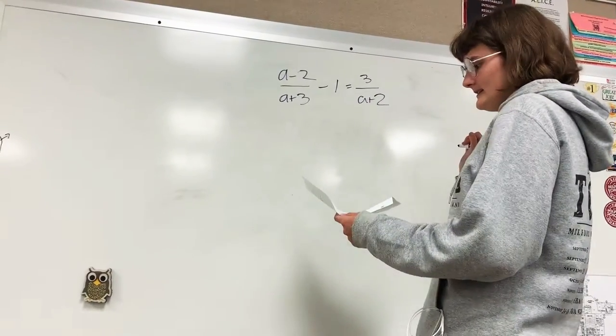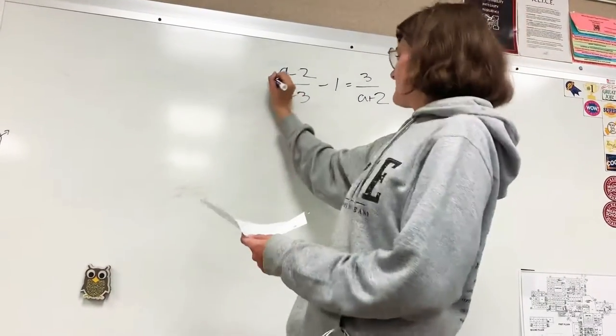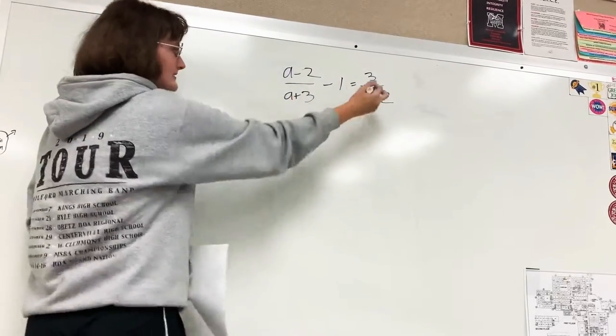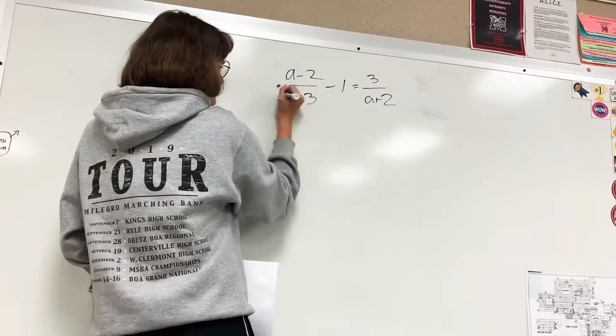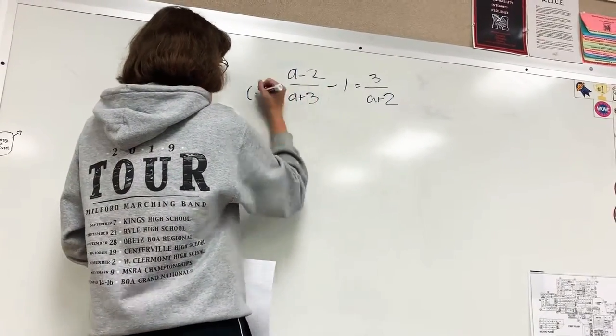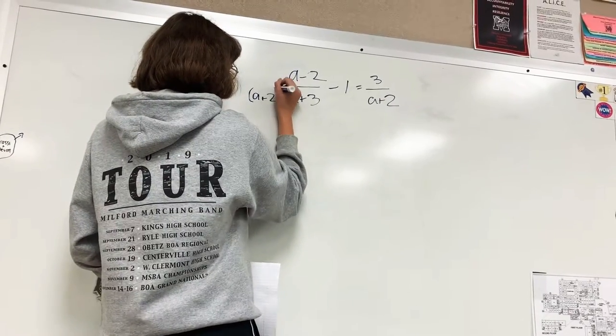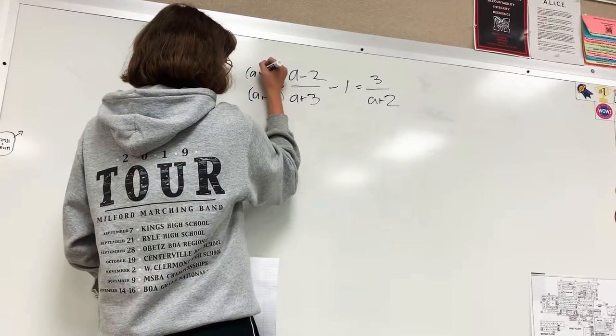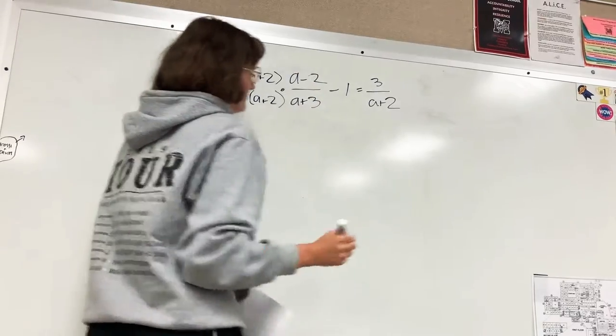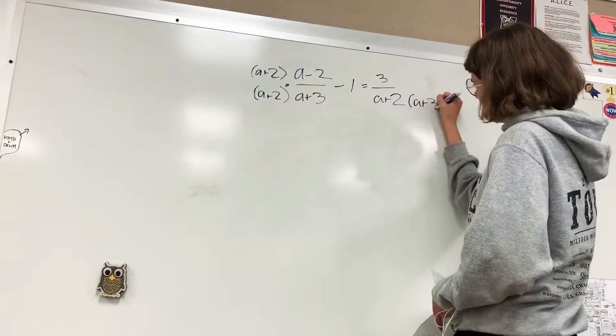The first thing we need to do is multiply by the opposite denominator, so multiply this by (a+2) on both the top and bottom, and then you do (a+3) on this side.